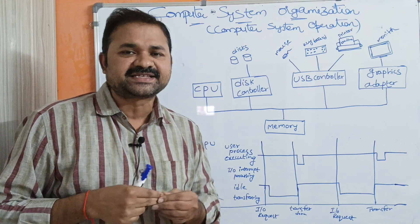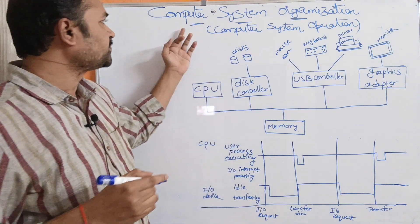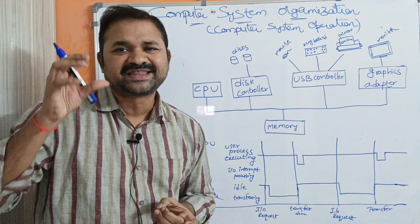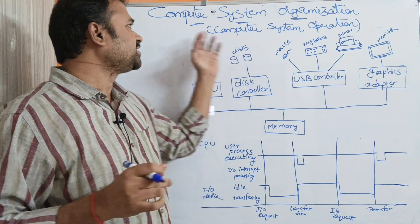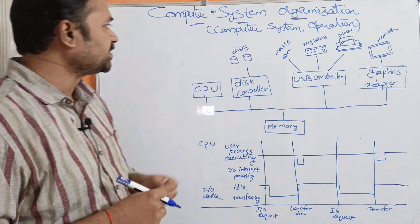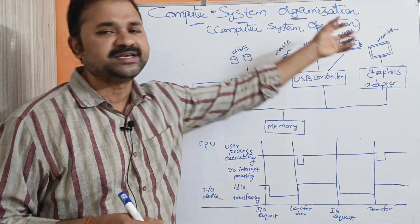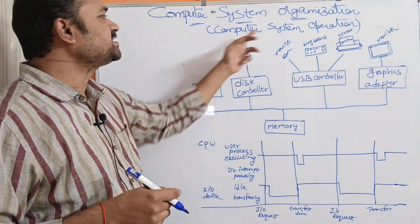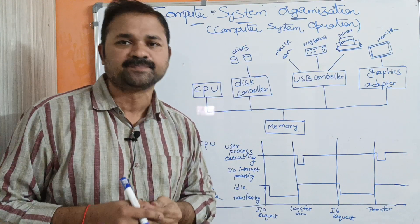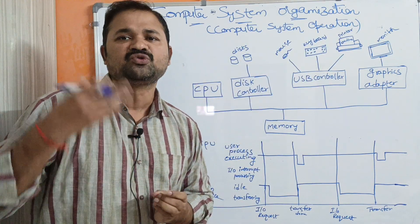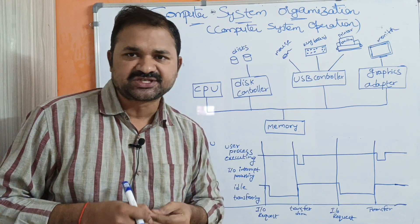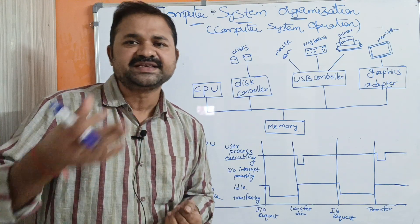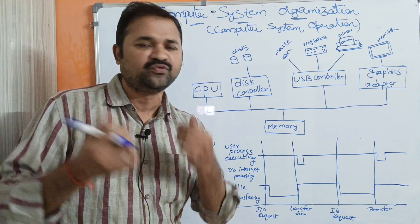Now let us discuss about computer system organization. We have three topics in computer system organization. In this video, we are going to discuss about the first topic, that is computer system operation. We have two more topics such as storage structure and I/O structure. We will discuss those two topics in the next two videos.